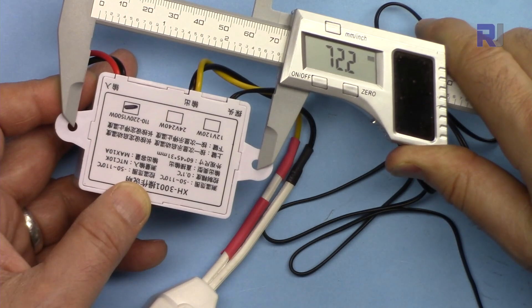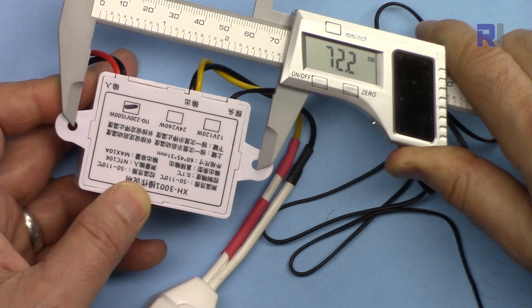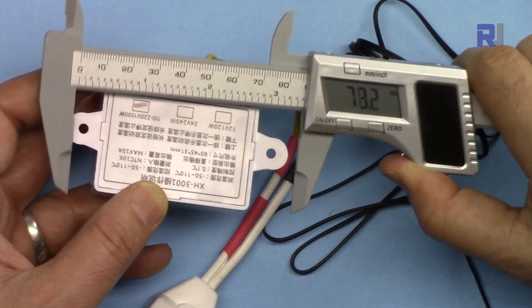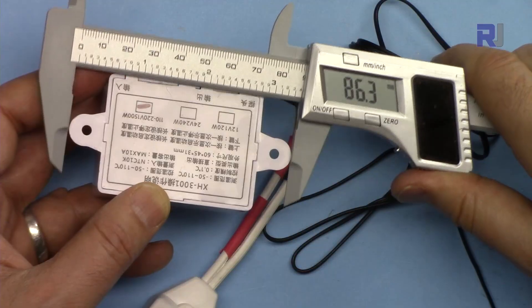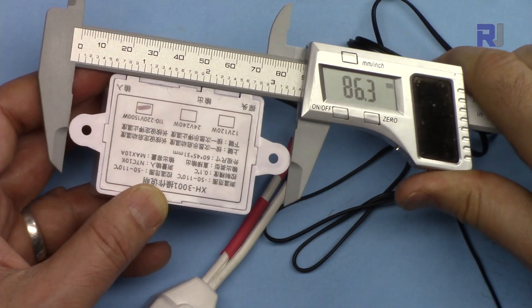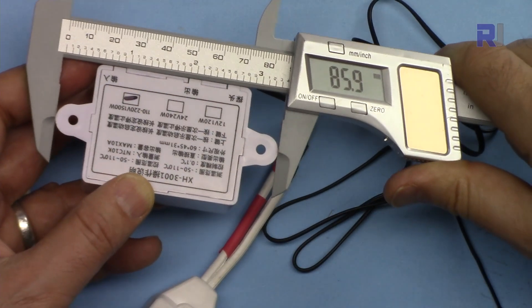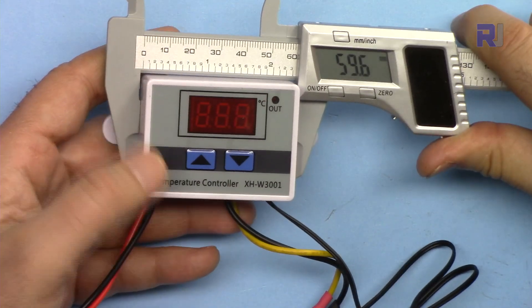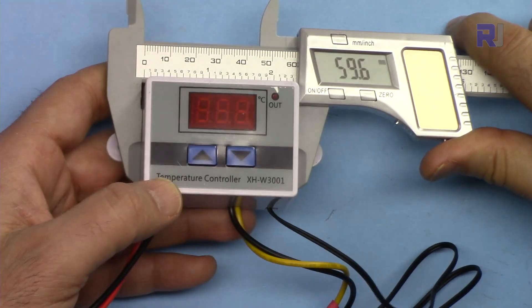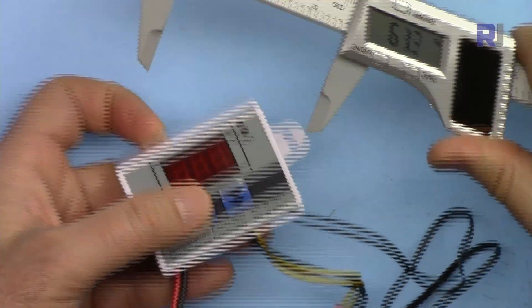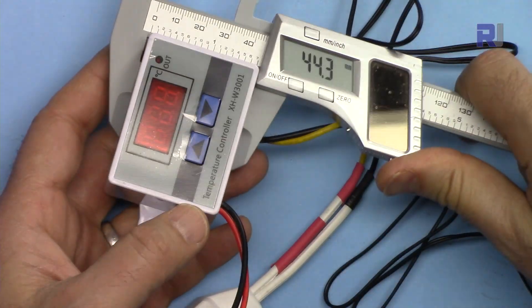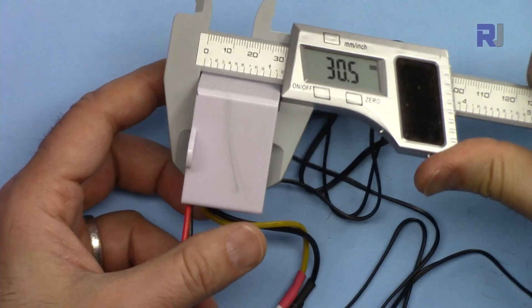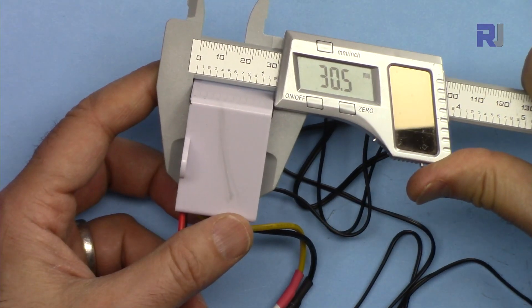If you want to know the exact distance between the center of the holes, they are 72.2 millimeters, and the total distance is 85.9 millimeters. The length of this is 59.6 millimeters, 60 millimeters. The width is 44.3 millimeters. The depth is 30.5 millimeters.